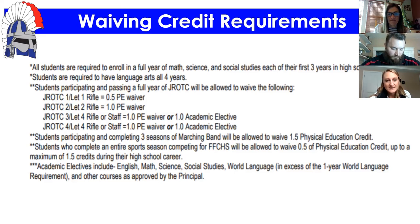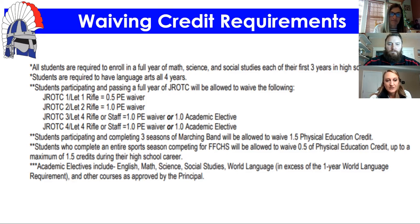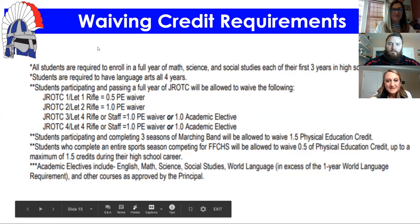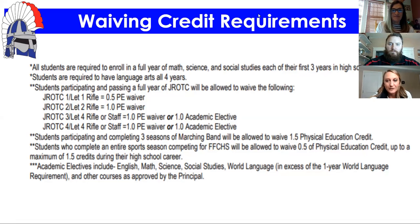Most students who pass all four years will have more credits than needed, so the waiver works smoothly. Another activity that can count as PE is marching band, and sports seasons — for example, completing a season of cross country — would give you half a credit of PE waiver. You need to complete the season for the waiver to apply.